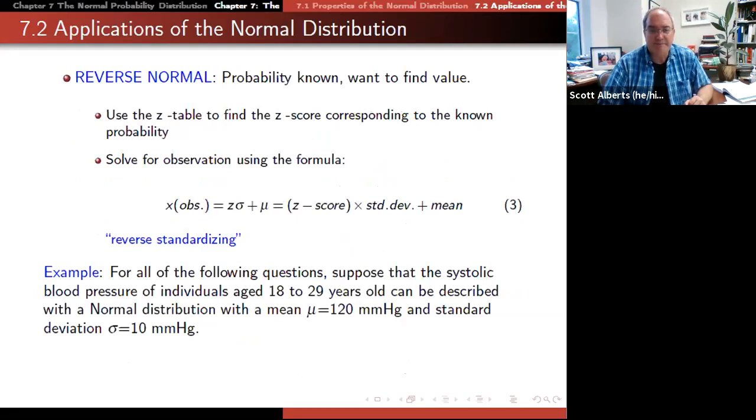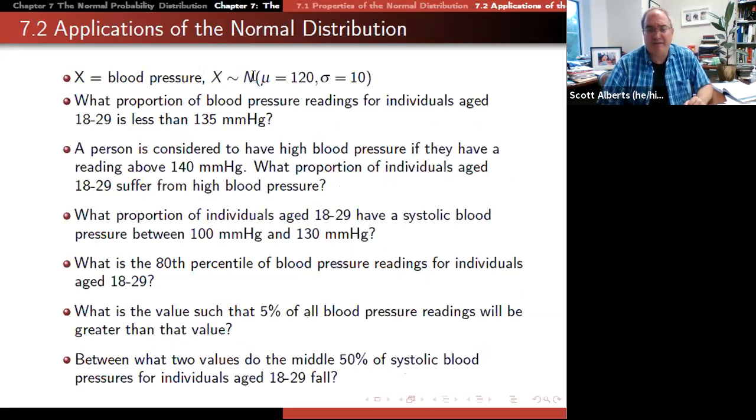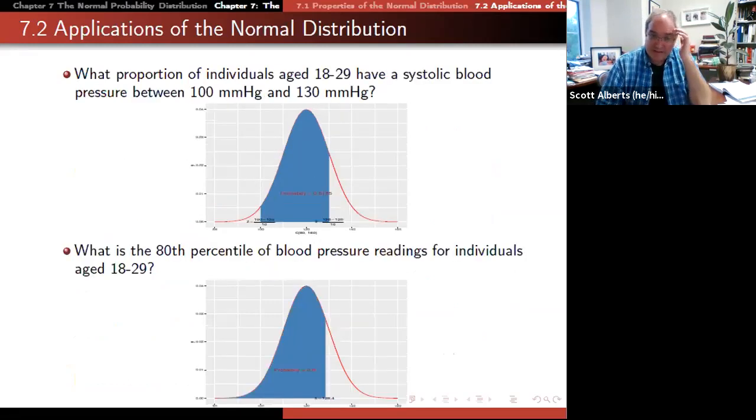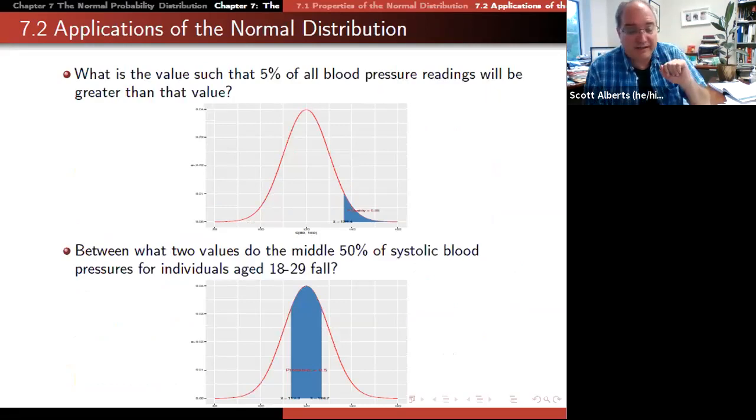We can do the same thing backwards just by working with the formula backwards and reverse standardizing. If someone has a blood pressure on average of mean of 120 and a standard deviation of 10, we could do that same calculation we did before. What proportion of people have blood pressure readings less than 135 millimeters? We can actually do this one by hand. 135 is 15 bigger than 120, and if we divide it by 10, that's 1.5. So that's 1.5 standard deviations above the mean. So we've standardized that value.